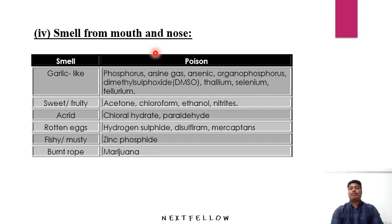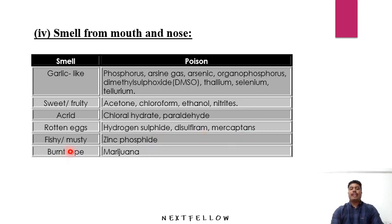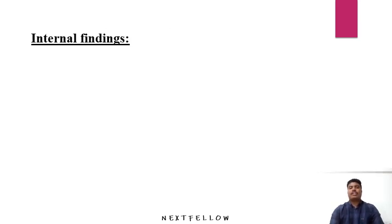Smell from the mouth and nose can help differentiate types of poisoning. A garlic-like smell suggests phosphorus, arsine gas, arsenic, organophosphates, DMSO, thallium, selenium, or tellurium. A sweet or fruity odor suggests acetone, chloroform, ethanol, or nitrates. An acrid odor is seen with chloral hydrate and paraldehyde. A rotten egg-like odor is present in hydrogen sulfide, disulfiram, and mercaptans. A fishy or musty odor is present in zinc phosphide. Marijuana gives a burned rope-like odor.